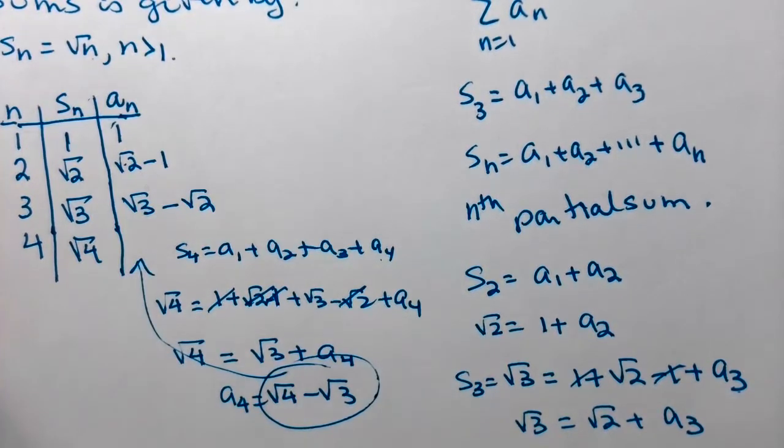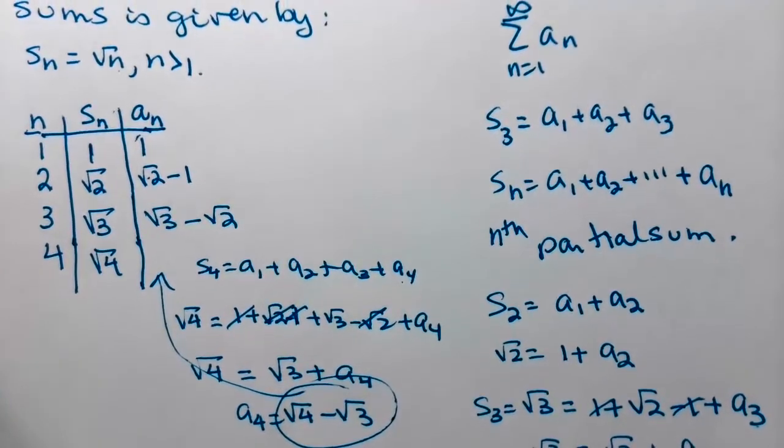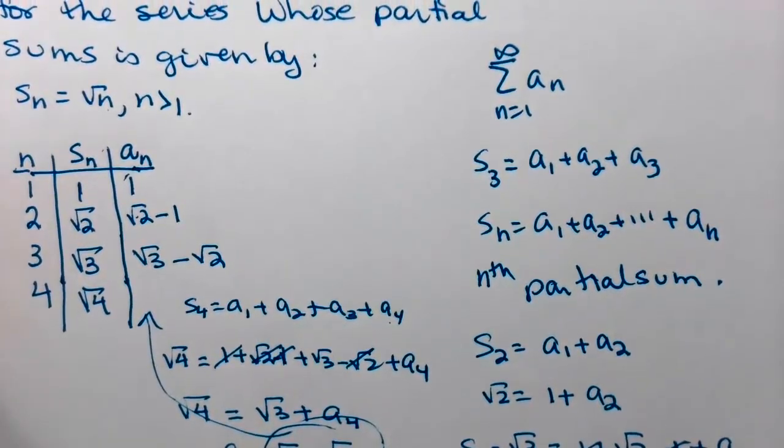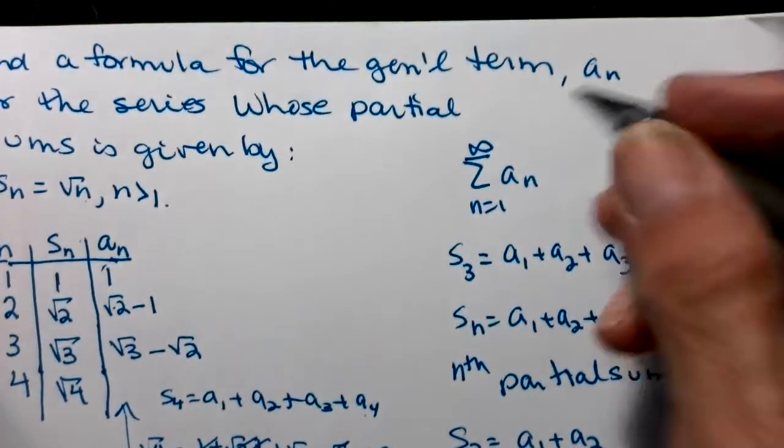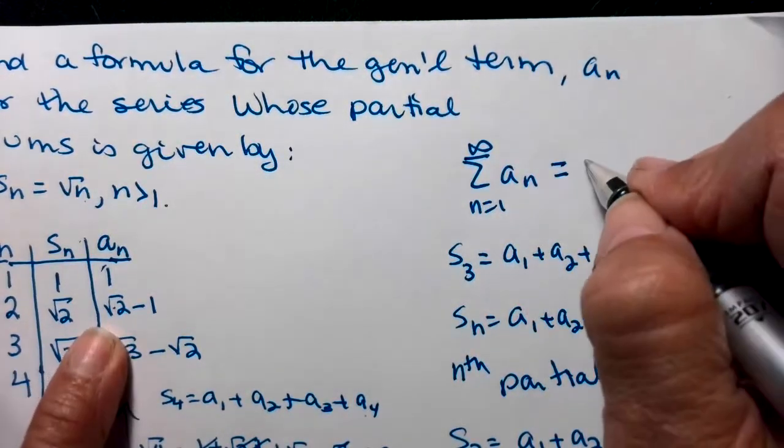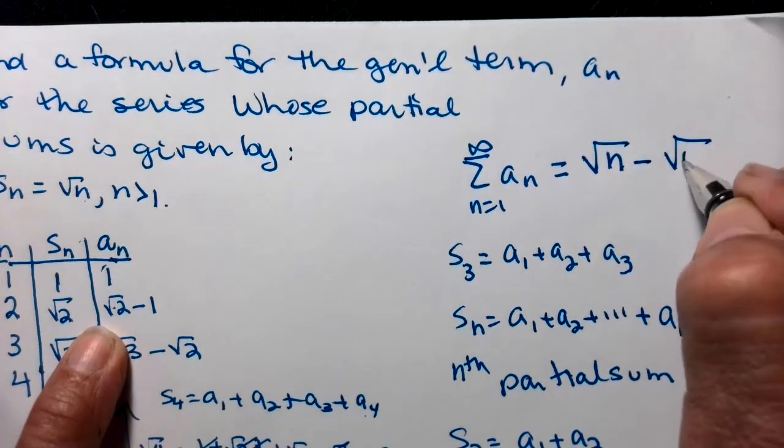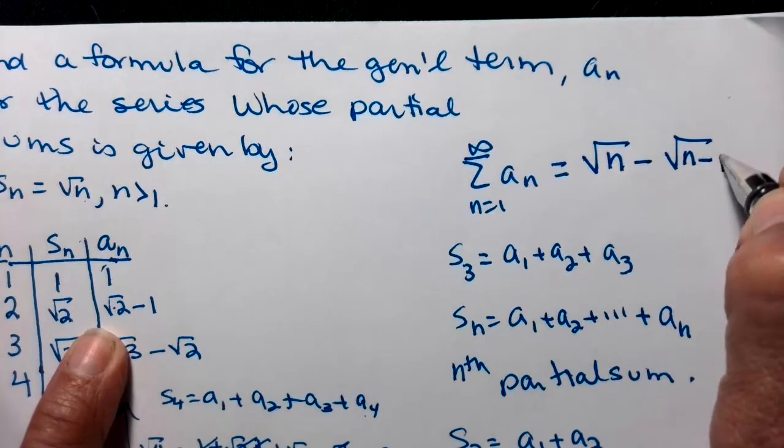Do we see the pattern? Are we ready to write down a generic a sub n term? All right, I think I've got it. So this is going to equal, let's make sure they match up here, square root of n minus the square root of n minus 1.